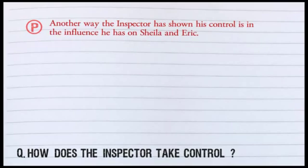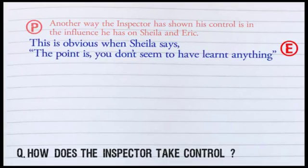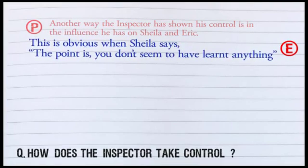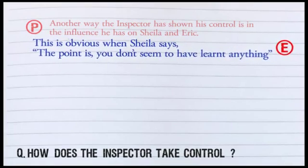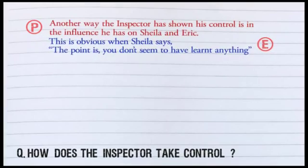Now I need some evidence, so I'm going to put that in here. When Sheila says, 'The point is, you don't seem to have learned anything.' This is the discussion that the young Birlings are having with the elder Birlings after the inspector has left, or just around that time. Now I'm going to start explaining this.